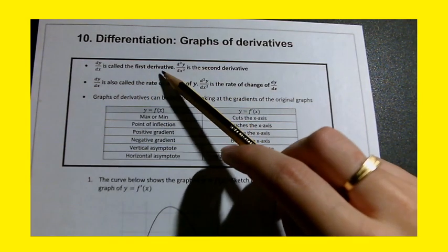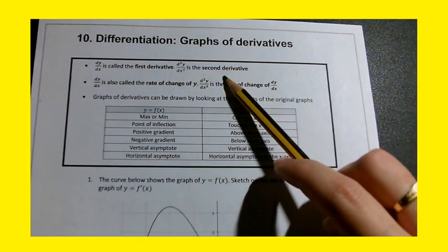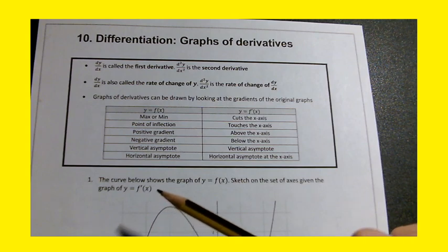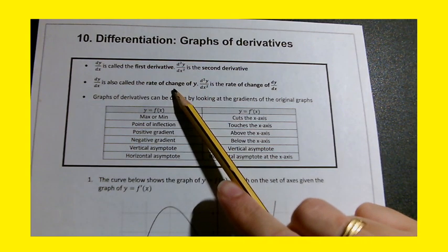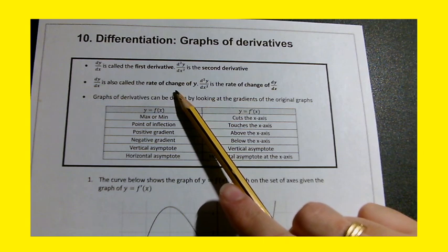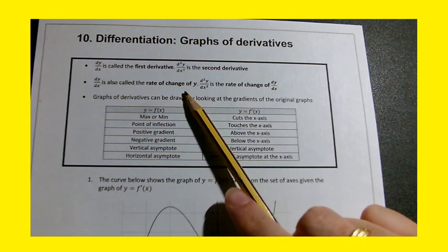As we know, dy dx is called the first derivative and d squared y dx squared is called the second derivative. Another way of looking at differentiation is the rate of change of y, how quickly the y value is changing with regards to the x values.